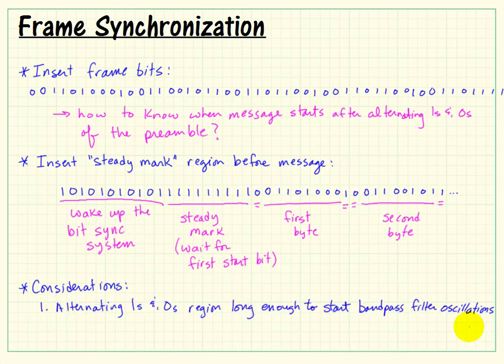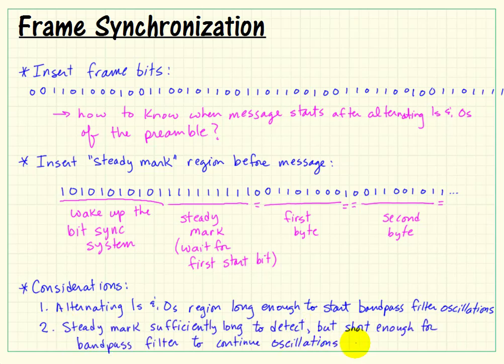Now, two considerations here. The alternating ones and zeros region has to be long enough to ensure that the bandpass filter in our bitsync system starts up.